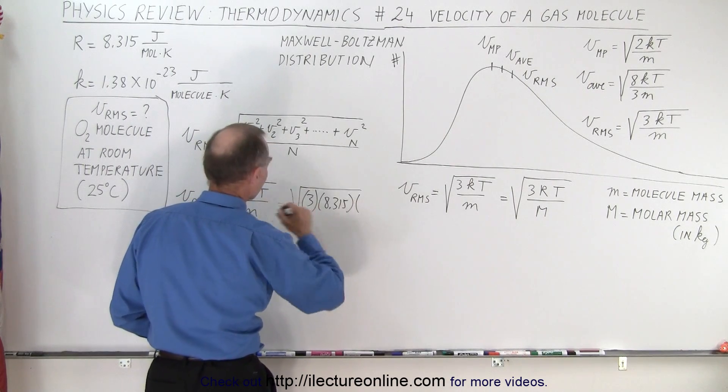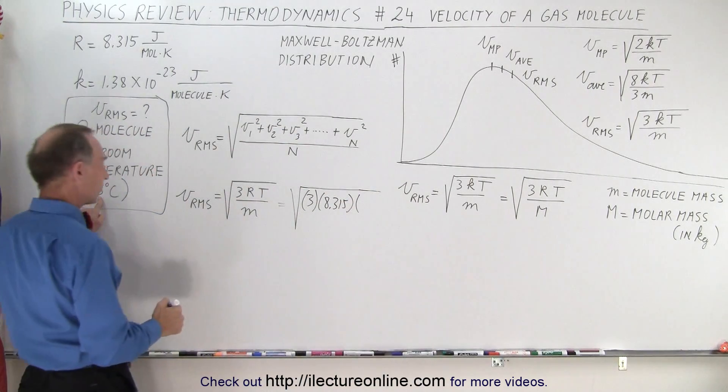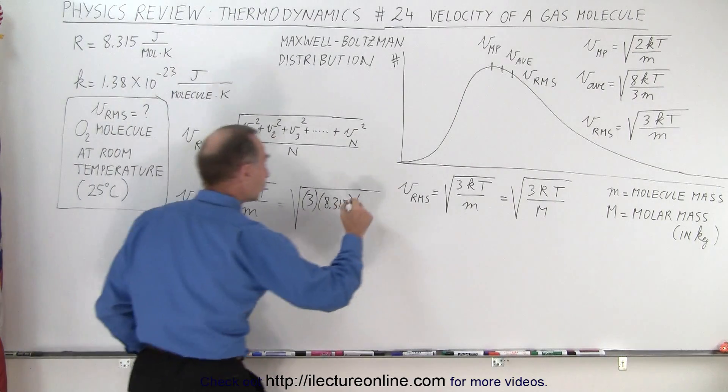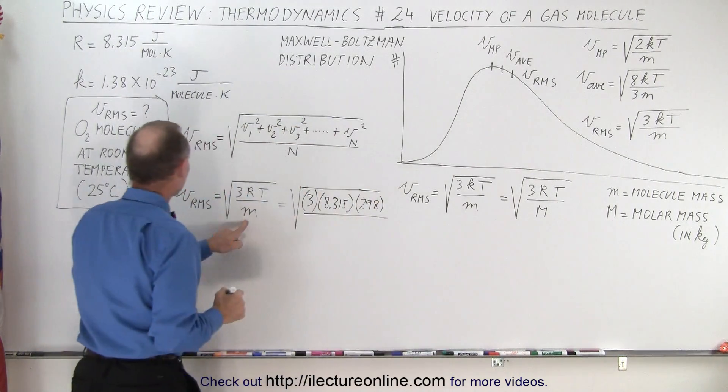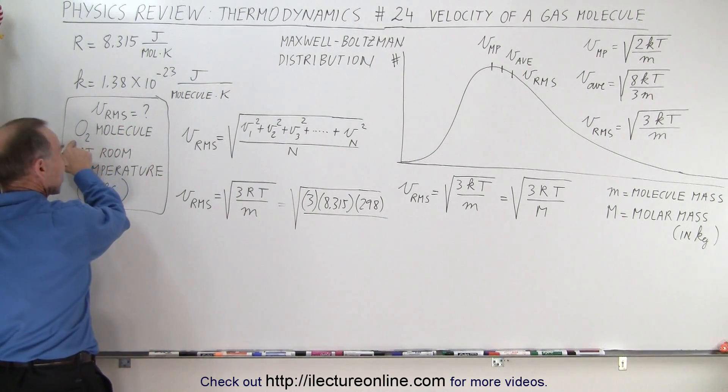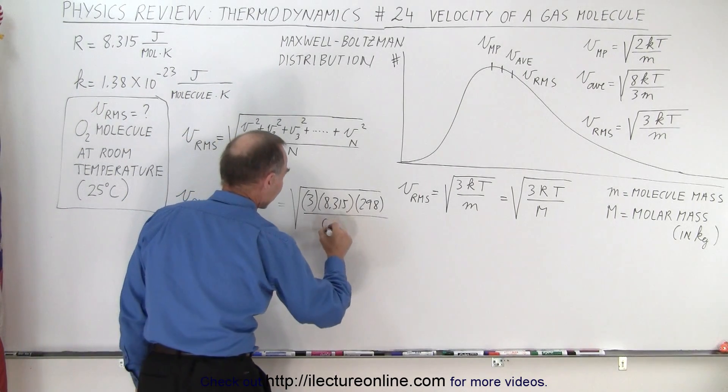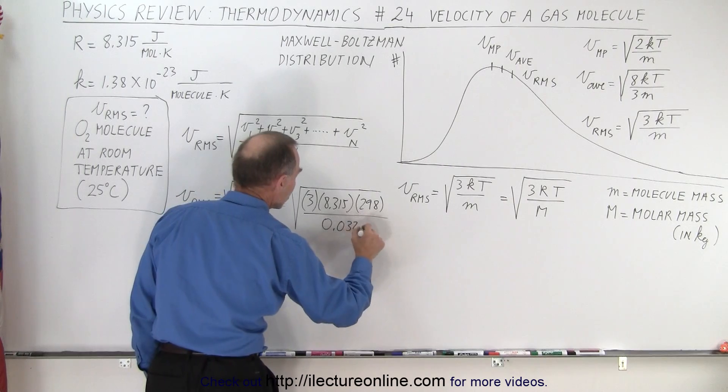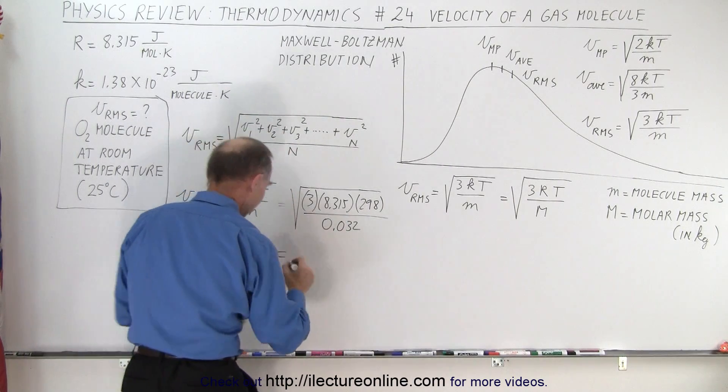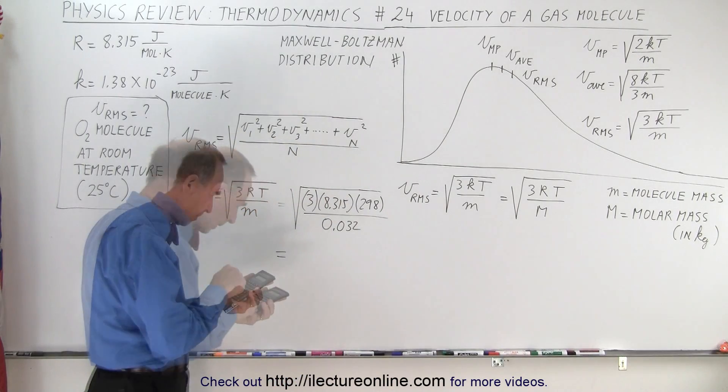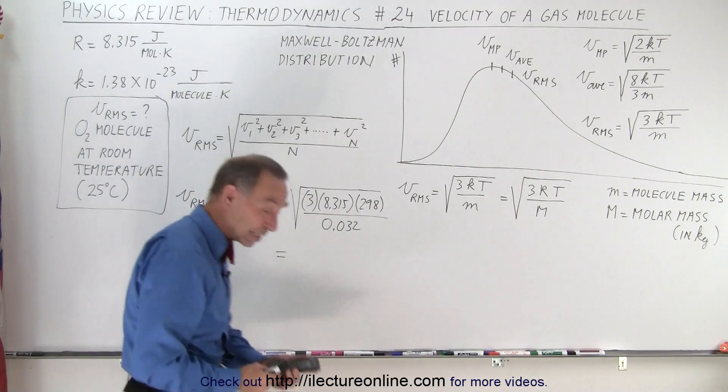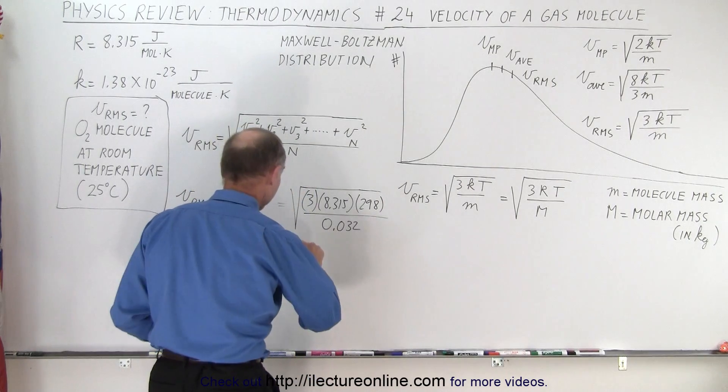3 times 8.315 times 298 - the temperature, 25 degrees Celsius, that would be 298 Kelvin - divided by the mass. So oxygen is a diatomic molecule, so that would be 32 grams or 0.032 kilograms. And then we need a calculator. 482 meters per second.